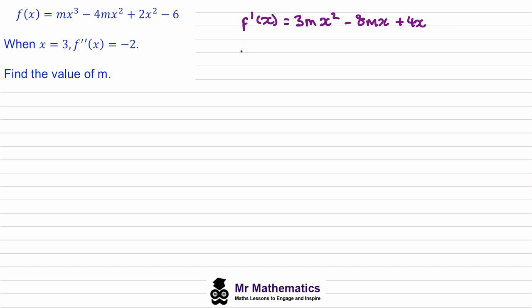We differentiate again to get f''(x). We bring the 2 down to get 6mx, the constant term becomes just 4.